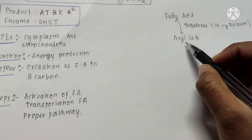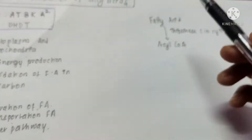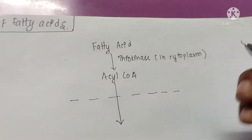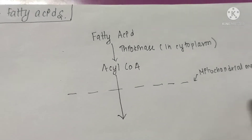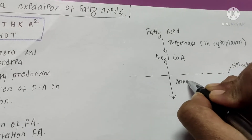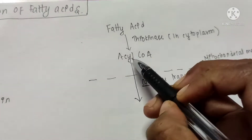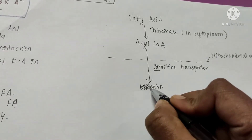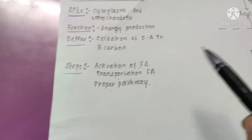The next step is transportation of the fatty acid. Transportation takes place from the cytoplasm to the mitochondria. This is the mitochondrial membrane. The transporter here is carnitine — similar to a car, carnitine transports acyl CoA from the cytoplasm to the mitochondria.